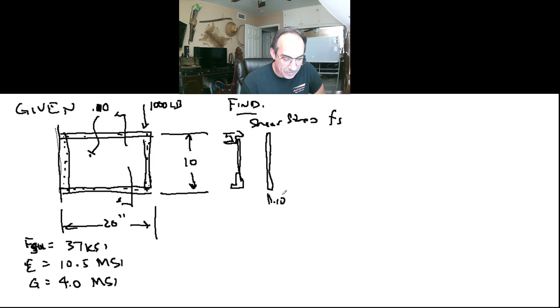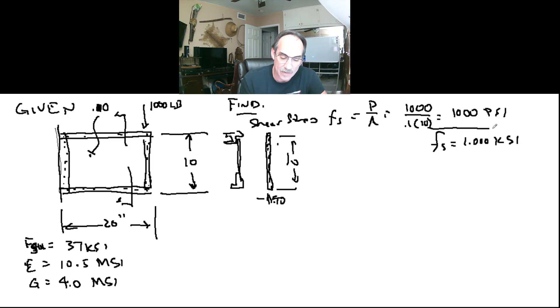It's 0.1 inches thick, and it is 10 inches tall. Therefore, no matter where we take a section cut across this thing, this is going to be our section. Since our shear stress is P over A, we're just going to have 1,000 divided by the area of that, which is 0.1 times 10. And that is going to give us a shear stress of 1,000 PSI. So, if that were our first answer, we'd say 1.000 KSI, and we would box that answer.